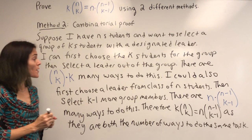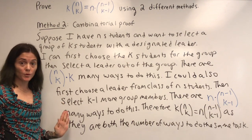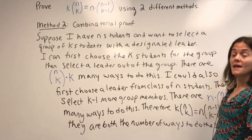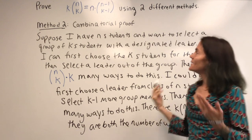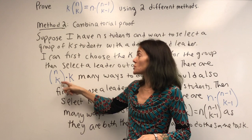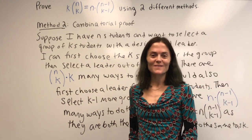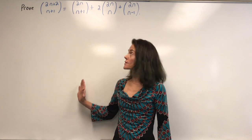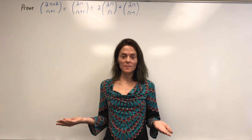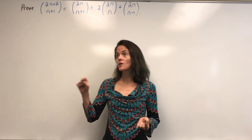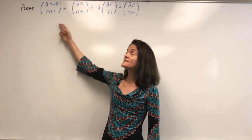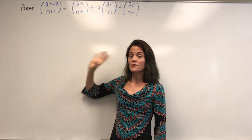Notice the difference between this and the other method: never in this entire method did I use the formula for n choose k as n factorial over k factorial times n minus k factorial. I just used what it means from a counting point of view. Now let's give a combinatorial proof for the next identity, which means we will find something that the left-hand side and the right-hand side both count.